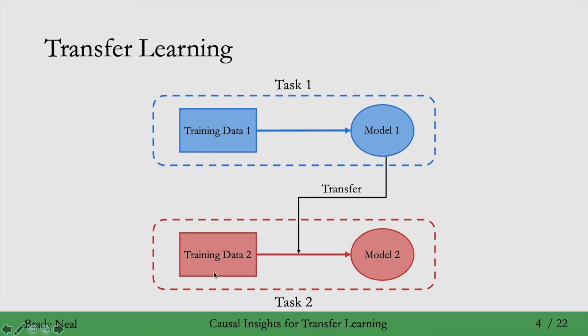And we could even have zero training data for task 2, and the transfer from task 1 to task 2 is all we have for our model 2. Additionally, here I've only drawn two tasks, but more general transfer learning could have many tasks.